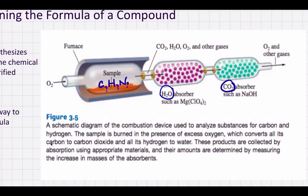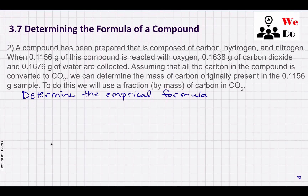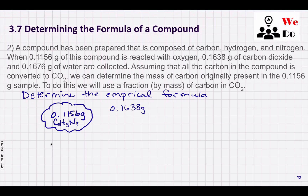It's a little bit different than some of our other empirical formula problems. We know that we have a 0.1156 gram sample that contains carbon, hydrogen, and nitrogen — we just don't know the subscripts. Once combustion happens, we get 0.1638 grams of CO₂ and 0.1676 grams of water.